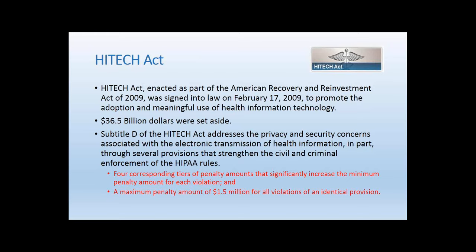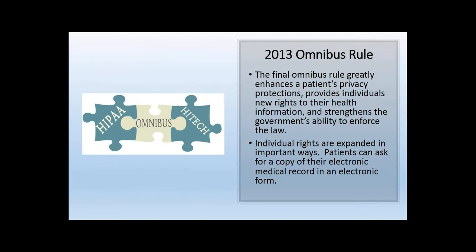Penalties vary based on corresponding tiers. If you simply didn't know and made a mistake, that's viewed at one level; but if you knew it was law and willingly neglected it, that's a much higher penalty. Penalties can compound. The next progression of HIPAA law came in 2013 with the Omnibus Rule.